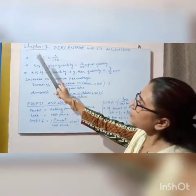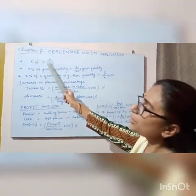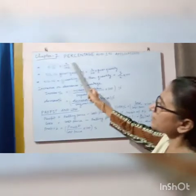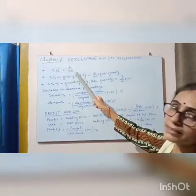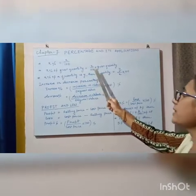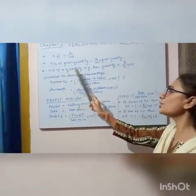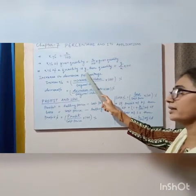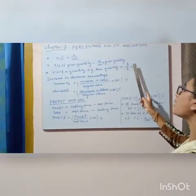X percent of any number equals fraction where bottom number is 100. X percent of the given quantity equals X by 100 into given quantity. If X percent of the quantity is Y, then quantity equals Y by X into 100.